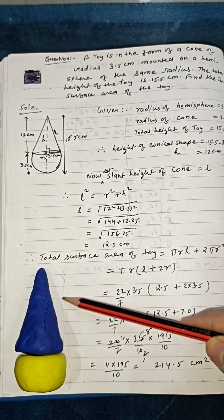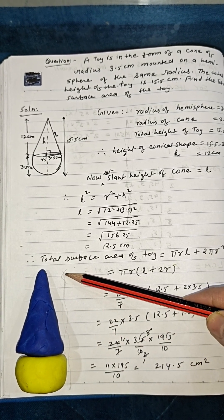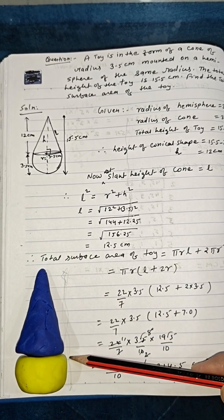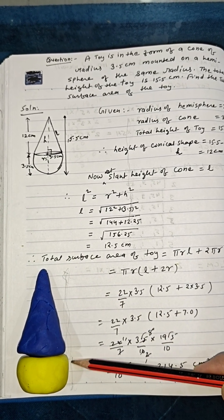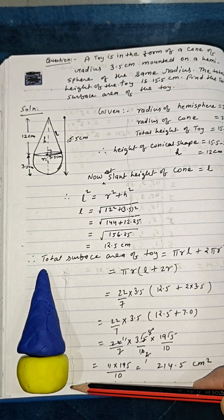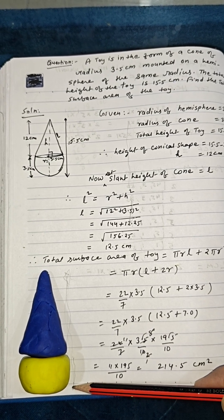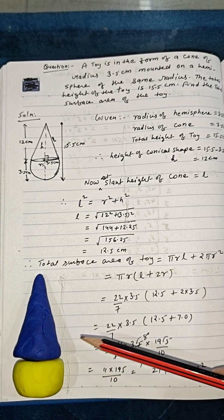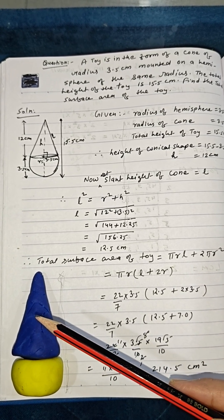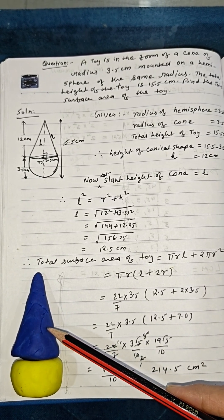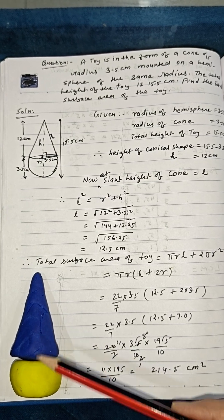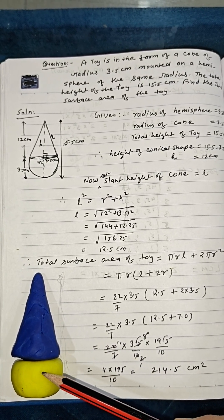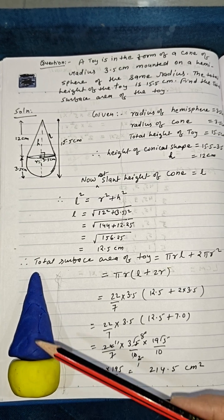The height of the cone can be calculated by subtracting the hemispherical height from the total height. For the formula, the surface area of the conical shape is πrl, and the surface area of the hemisphere is 2πr².